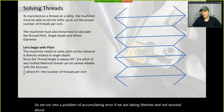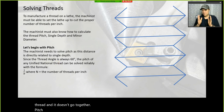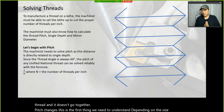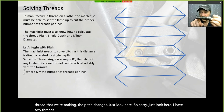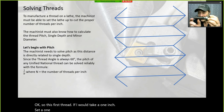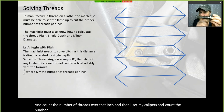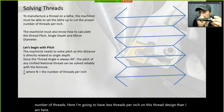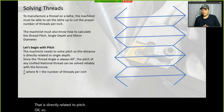Pitch changes — depending on the size of the thread we're making, the pitch changes. If I set my calipers at one inch and count the threads on one thread design compared to another, I'll have fewer threads per inch on the coarser thread design. That is directly related to pitch.